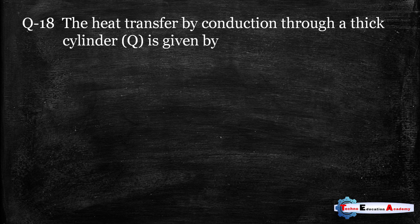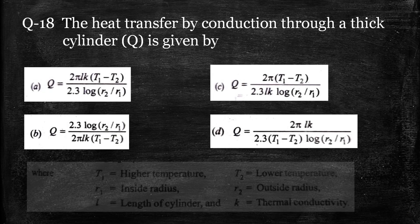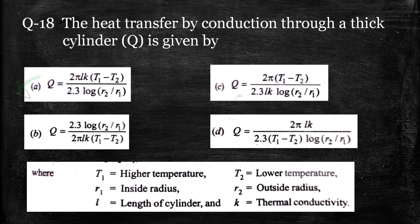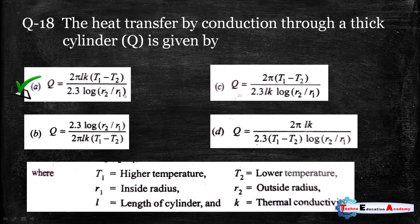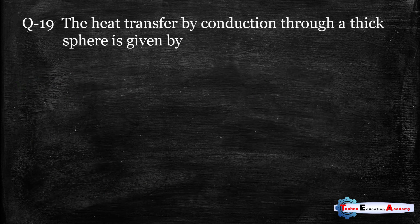Question number eighteen: the heat transfer by conduction through a thick cylinder is given by Q = 2πLk·(T1 − T2) / (2.3·log(r2/r1)), where L is the length of the cylinder, k is the thermal conductivity, T1 and T2 are the higher and lower temperatures, r2 is the outer radius, and r1 is the inner radius of the cylinder.